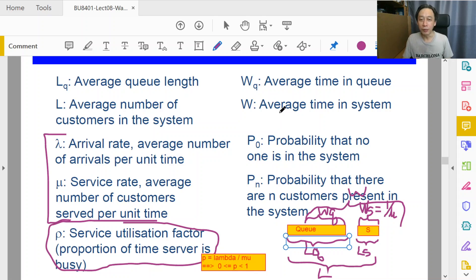W is the average time in the system. We can also make it more understandable by translating it a little bit from the perspective of the customer. So W represents the average amount of time that a typical customer, a randomly chosen customer, would experience going into the system and then coming out from the system.